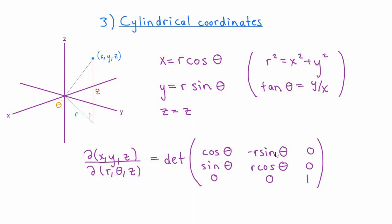This is enough for us to compute the Jacobian matrix. To find the first row, we take the partial derivatives of r cosine theta with respect to r, theta, and z. Similarly, to find the second row, we take the partial derivatives of r sine theta with respect to r, theta, and z. And to find the final row, we take the partial derivatives of z with respect to r, theta, and z. When we compute the determinant of this three-by-three matrix, we find that the Jacobian determinant is equal to r.